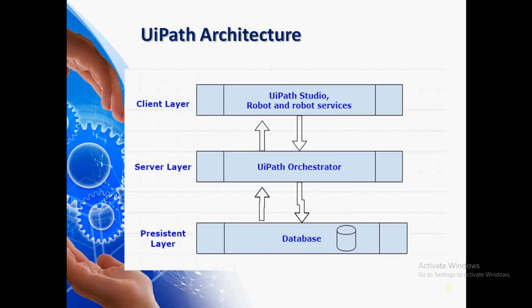So here you can see the UiPath architecture. Basically, this is divided into three layers or three sections. The first is the client layer, next is the server layer, and next is the persistent layer.